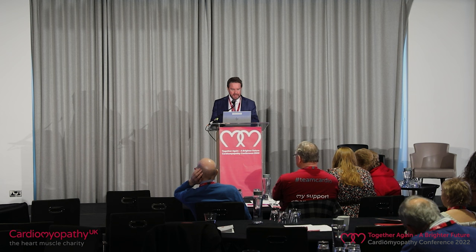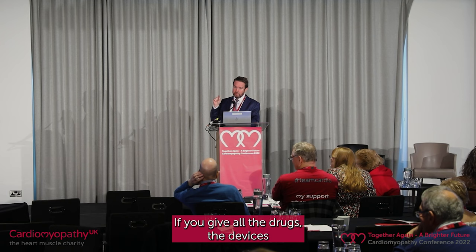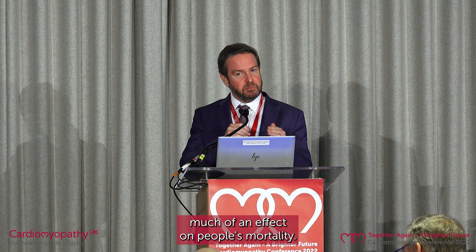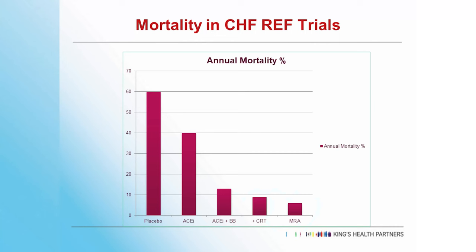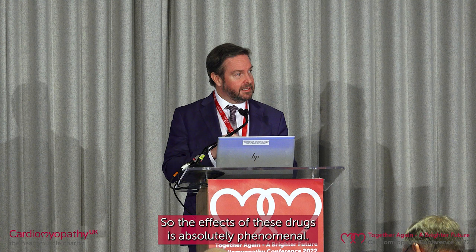The treatments work incredibly well. If you're 80 and come into hospital with heart failure, your risk of dying in a year is about 60%. With all the drugs, devices, and everything, that comes down to about 5%. There is nothing else in medicine that has that much of an effect on mortality. Primary angioplasty for heart attacks brings absolute mortality down from 7% to 6% — a 1% change. This is a 50% change in one-year mortality. We also see this in the heart failure audit: outcomes are so much better when people have the right medicines.